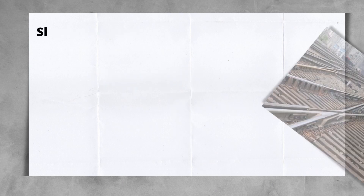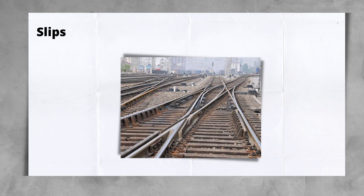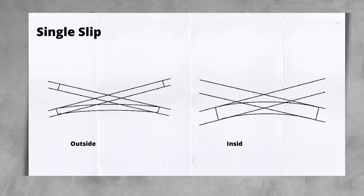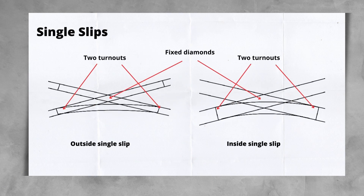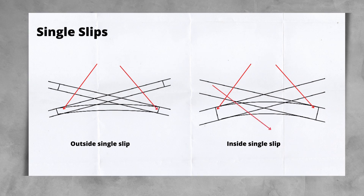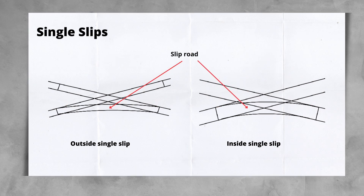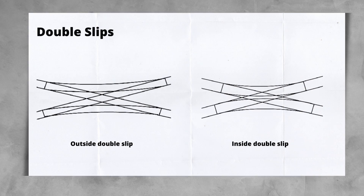Another group of layouts now most likely found in yards and sidings are slips. Slips are hard to maintain from both the track and signalling perspective, but do allow a large amount of operational flexibility given the number of routes available. There is the single slip, with both outside and inside configuration, consisting of two turnouts and a fixed diamond. The route between the turnouts is called the slip road. The outside slip becomes an inside slip if the slip road is within the diamond, saving space but placing a lot of equipment in a small area. If two more turnouts are added, the layout becomes a double inside or outside slip, which increases the number of routes but also increases the complexity of the installation and ongoing maintenance.